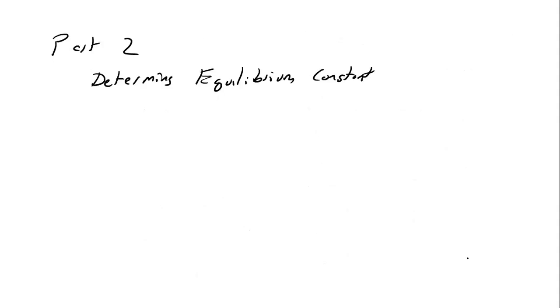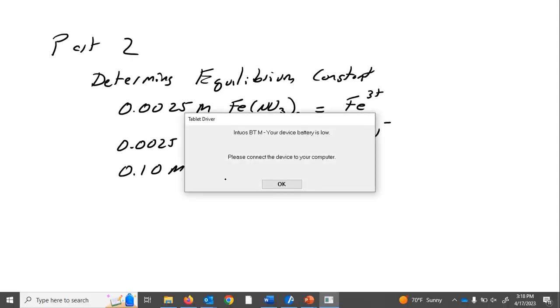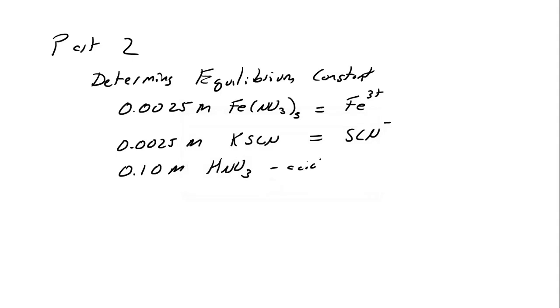In part 2, like you said, you're determining the equilibrium concentration. This time the concentrations are different. I have 0.025 molar FeNO3, which like I said is the same thing as Fe3+, the NO3 is just the counter ion. I have 0.0025 molar KSCN, which is the SCN minus ion, and I still have 0.1 molar nitric acid, which is just to make it acidic. That's basically its only purpose.